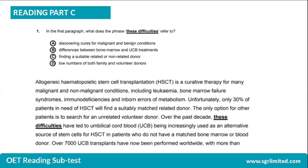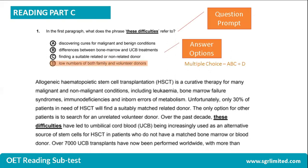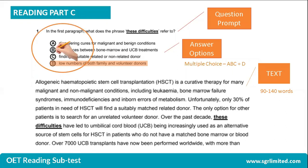The way that you answer the questions in Part C is pretty similar to Part B, though. You also have a question prompt at the top and your answer options in the middle. This time around, we have an extra multiple-choice option, which is option D. And then on another page, you will try and locate the text corresponding to your question. Your job is still exactly the same: you need to highlight or shade the correct answer using option A, B, C, or D.